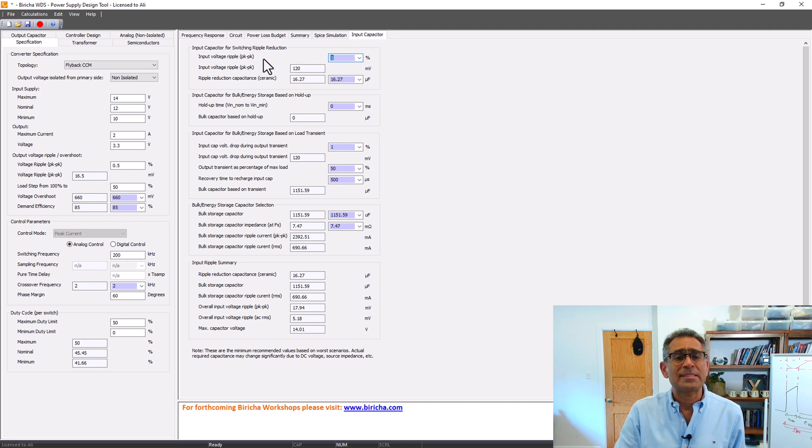you will see that WDS has already calculated the amount of ripple voltage that we're going to have, based on 1% of the nominal input voltage, and that is going to be around 120 millivolts if we assume that we have got a high impedance source, which is our worst case scenario, as I mentioned earlier.